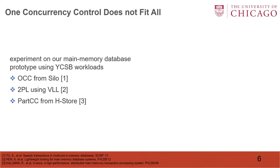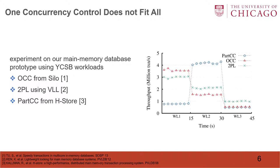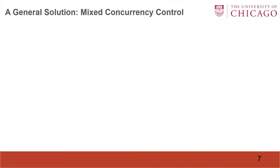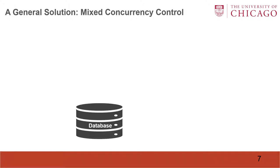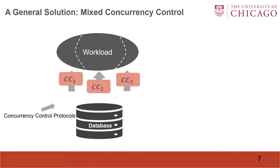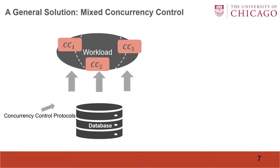We performed an experiment on our main memory database prototype using YCSB workloads and tested three protocols. We find that in each scenario, a different protocol can excel, which means one concurrency control does not fit all. Therefore, we consider a general solution of mixed concurrency control, which means we can incorporate several protocols into one database and apply each protocol to a part of the workload.